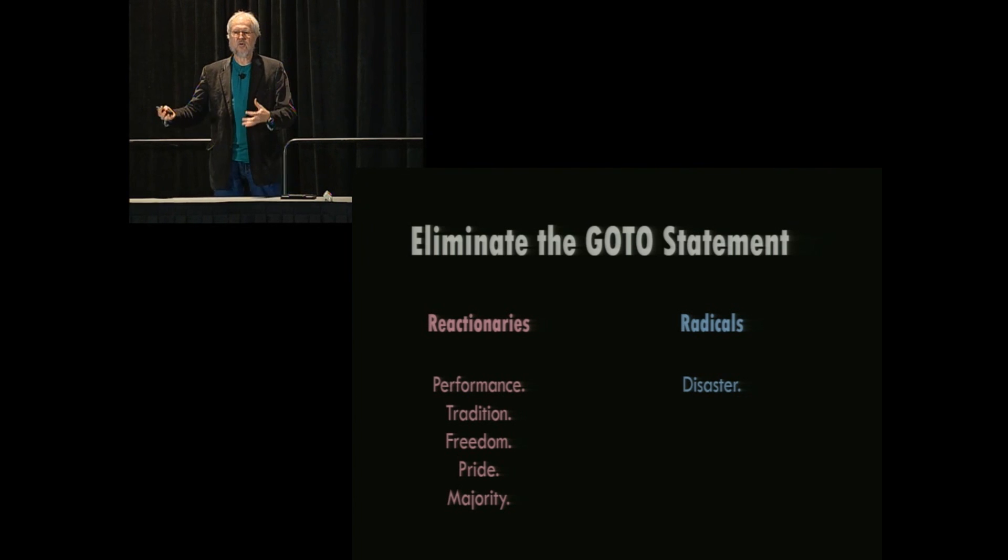There was an argument about freedom, that we have go-to in our languages, I should have a right to use it. It is how I express myself. I express myself with go-to's, and if you take the go-to's out of the language, I can't be an artist in the way that I write my code. It doesn't matter that my code is crap. I should have that right. And then there's the pride argument, that you're saying I'm not smart enough to know when it's okay to use go-to's and when I'm not. That's an insult, and I am angry, and for that reason we should continue to use go-to's.